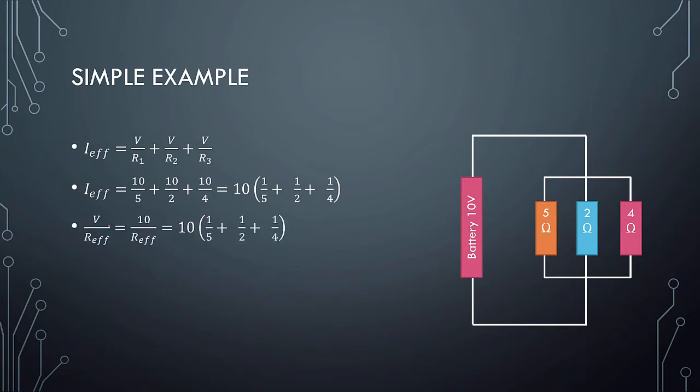And V over R effective is actually just 10 over R effective equals to this particular value. And of course, same thing, we can just cancel it out. And by adding it up, 1 over 5 plus 1 over 2 plus 1 over 4, you have 0.95. But since our mission is to find R effective, we just invert, and you get 1.05 ohms.